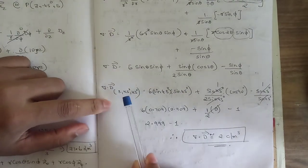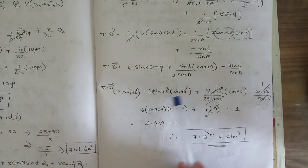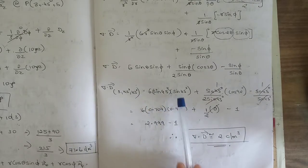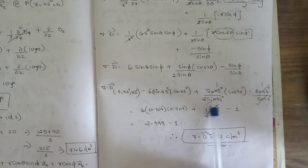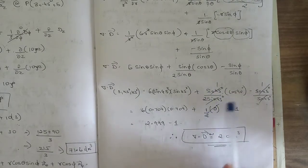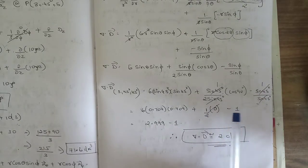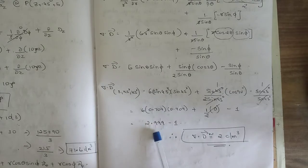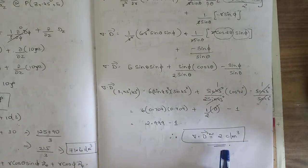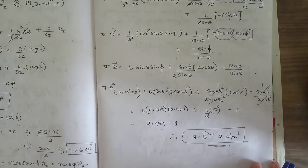Substituting P = (3, 45°, 45°): sin45° = 0.707. The sin45° terms cancel to give 1/2, and cos90° = 0, making that term zero. The last term: -sin45°/sin45° = -1. So del·D ≈ 3 - 1 = 2 coulombs per meter cube. This completes all three sub-questions on divergence.